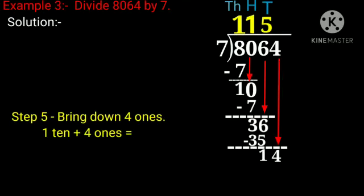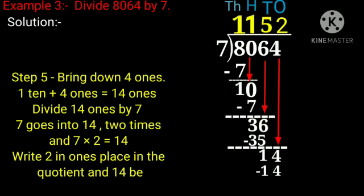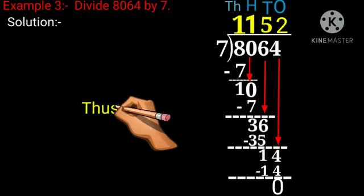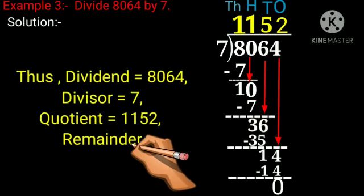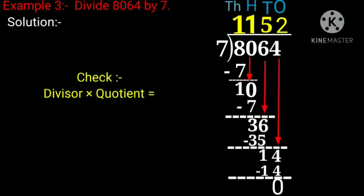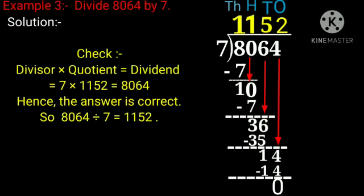Now bring down 4 ones. 1 and 4 will make 14. Divide 14 by 7. 7 goes into 14 two times. Write 2 in ones place in the quotient and 14 below 14. 14 minus 14 equals 0. Therefore the remainder is 0. Thus, dividend equals 8064, divisor equals 7, quotient equals 1152, and remainder equals 0. Check your answer: divisor into quotient equals dividend. 7 times 1152 equals 8064. Hence the answer is correct. So, 8064 divided by 7 equals 1152.